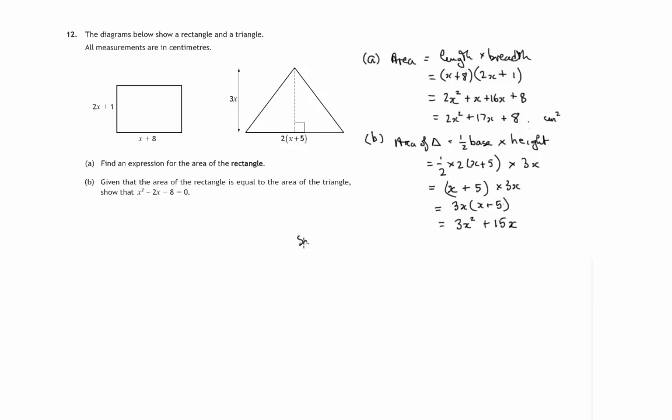So we know that the area of the rectangle is equal to the area of the triangle. So therefore this expression 2x squared plus 17x plus 8 is equal to this expression 3x squared plus 15x.